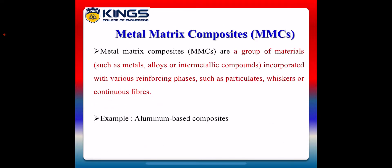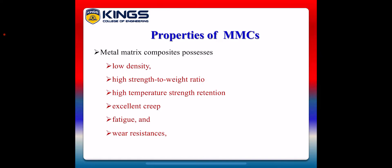The second type is metal matrix composites, simply called MMCs. MMCs are a group of materials such as metals, alloys, or intermetallic compounds incorporated with various reinforcing phases such as particulates, whiskers, and continuous fibers. Aluminium-based composites are an example of MMC. MMC possesses very important properties like low density, high strength-to-weight ratio, high temperature strength retention, excellent creep properties, and fatigue and wear resistance.